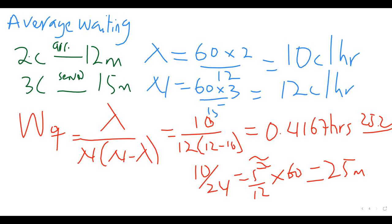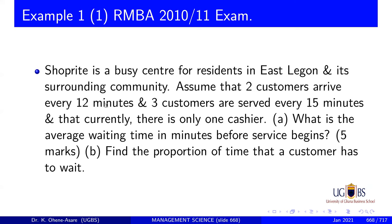Now let's go to the next part of the question. The question says: find the proportion of time that a customer has to wait. We are back with that same question — find the proportion of time that a customer has to wait. Proportion means percentage. If the customer has to wait, it means the server is being utilized. So you are being asked to find the utilization factor.